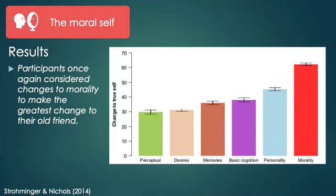What they found is that, once again, participants considered changes to morality to make the greatest change to their old friend's identity. After that, it was personality factors, then basic cognition and memories, and then perceptions and desires. There was no effect of age of the participant, and interestingly—contrary to what might be expected about distinctive rare events and their effects on people—the rarer the event in frequency, the less it was seen as contributing to the self.